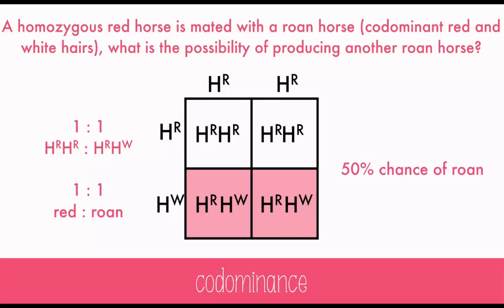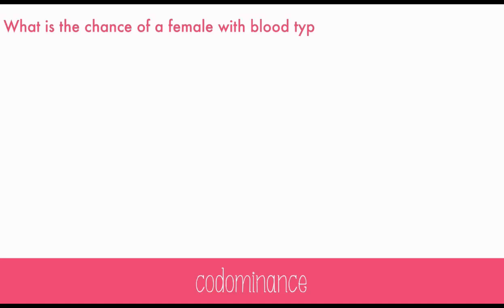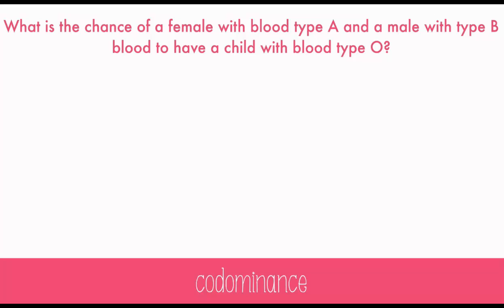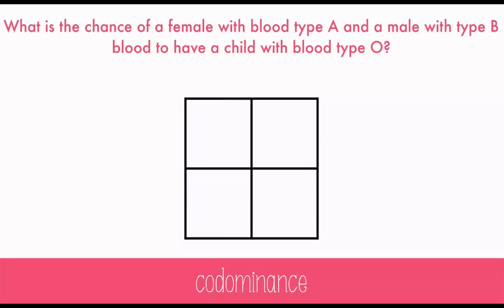Now let's try a blood type problem. What is the chance of a female with blood type A and a male with blood type B having a child with blood type O? For this problem, we'll assume the people with type A and B blood are heterozygous — otherwise, there would be no chance of having a child with type O. Blood type is commonly written with a capital I, with the letter superscripted.